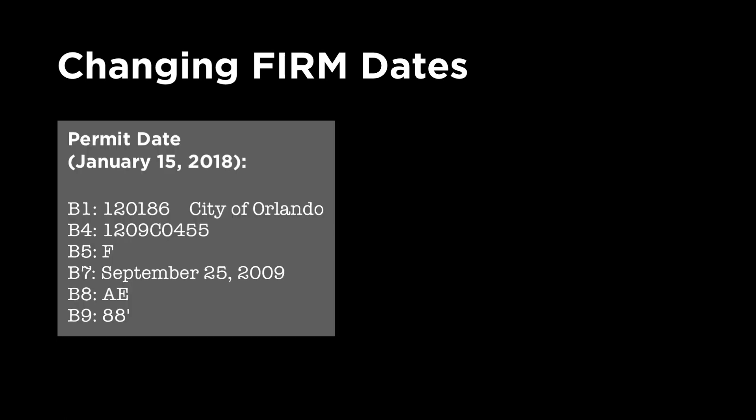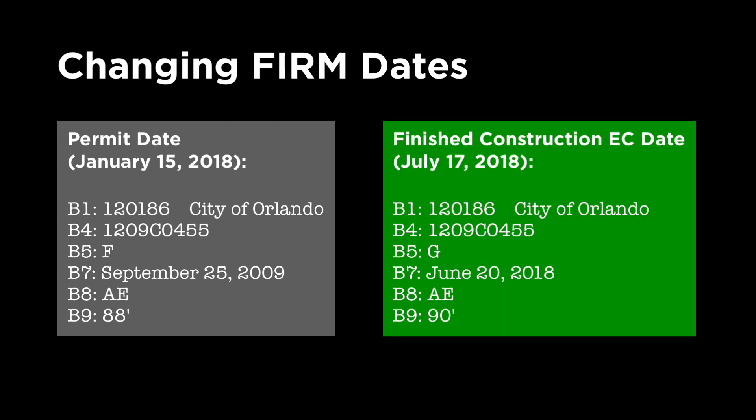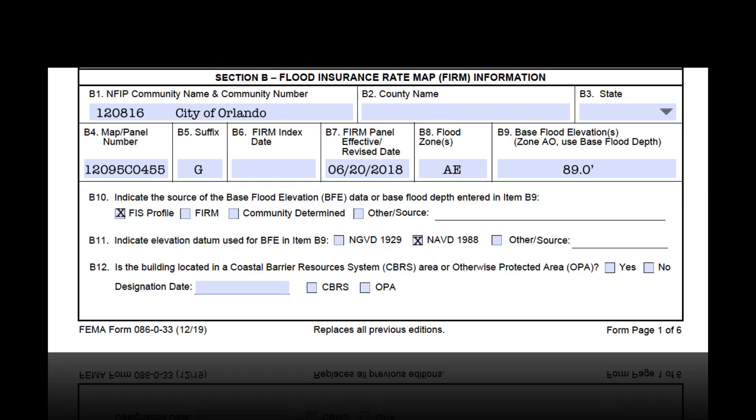Using our City of Orlando example: the left column shows the FIRM information at the time the building was permitted, and the right column shows the FIRM information at the time the building was completed and the finished construction EC was signed and dated in 2018, right after the new June 20, 2018 FIRM took effect. The BFE went up with the new FIRM — the developer may have built the lowest floor at 89 feet to satisfy the BFE at permitting, but with the new FIRM showing the BFE at 90, it looks like a compliance problem. The current FIRM information at the time the EC was signed goes in all required fields in Section B. Be sure to also fill in B10 and B11.